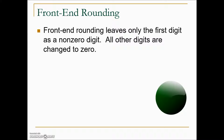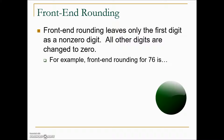Next we have another type of rounding called front-end rounding. It leaves only the first digit as a non-zero digit; all other digits are changed to zeros. This is a way of getting an answer very quickly when speed is of the essence. For example, front-end rounding seventy-six: the front digit is seven, immediately to the right is a six — five or greater — so the seven becomes an eight, giving us eighty.